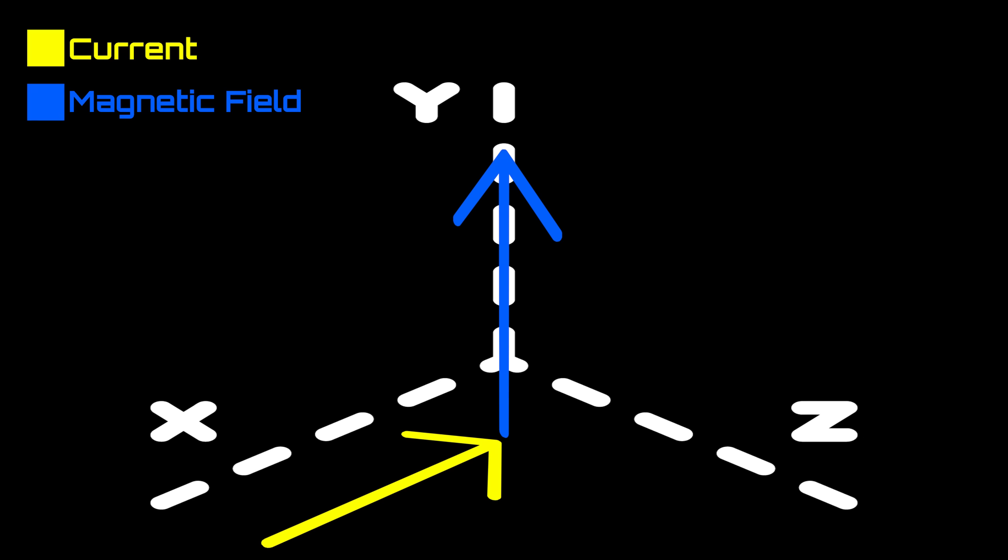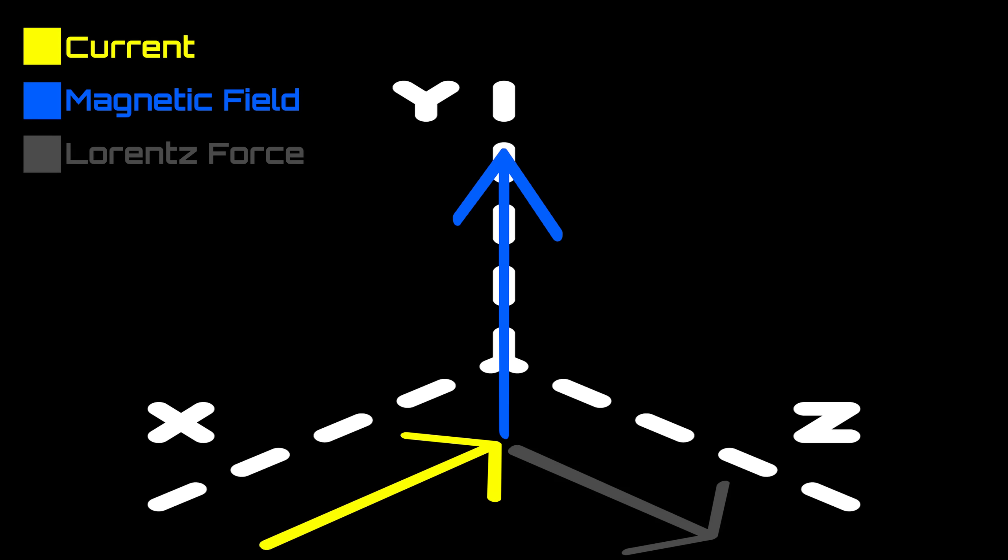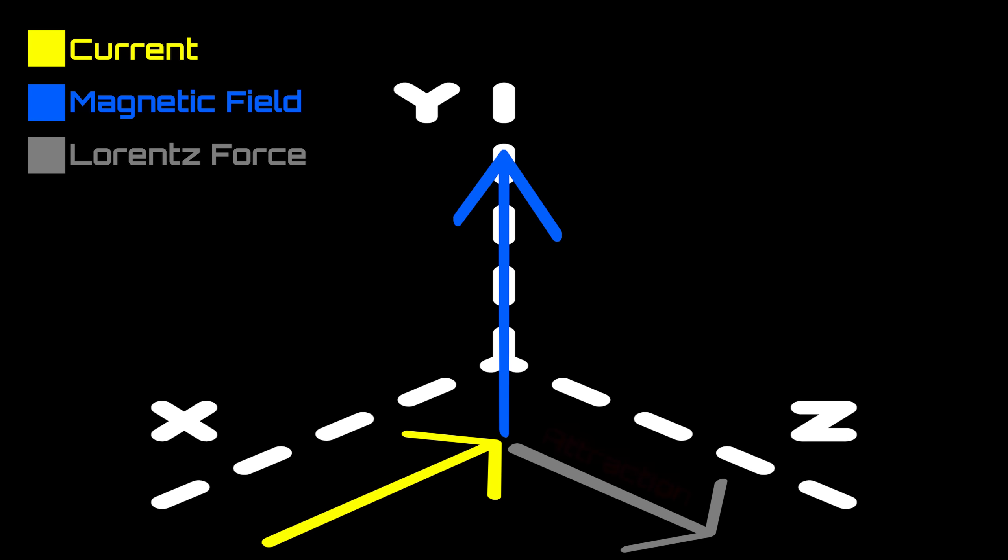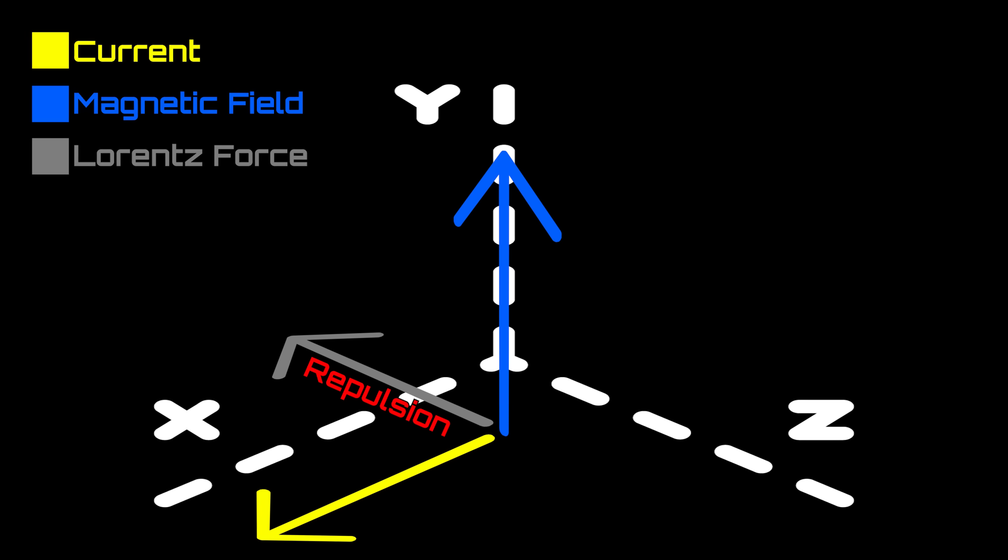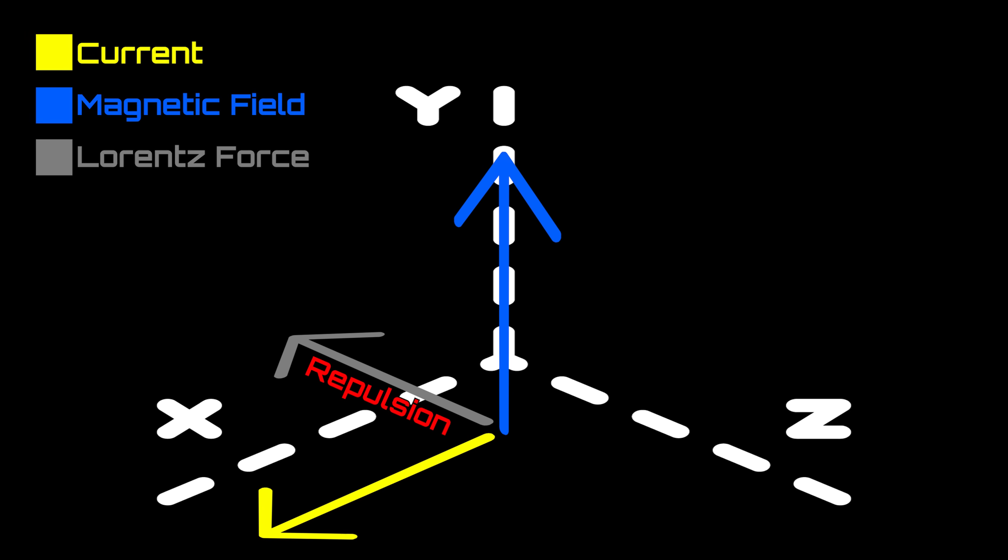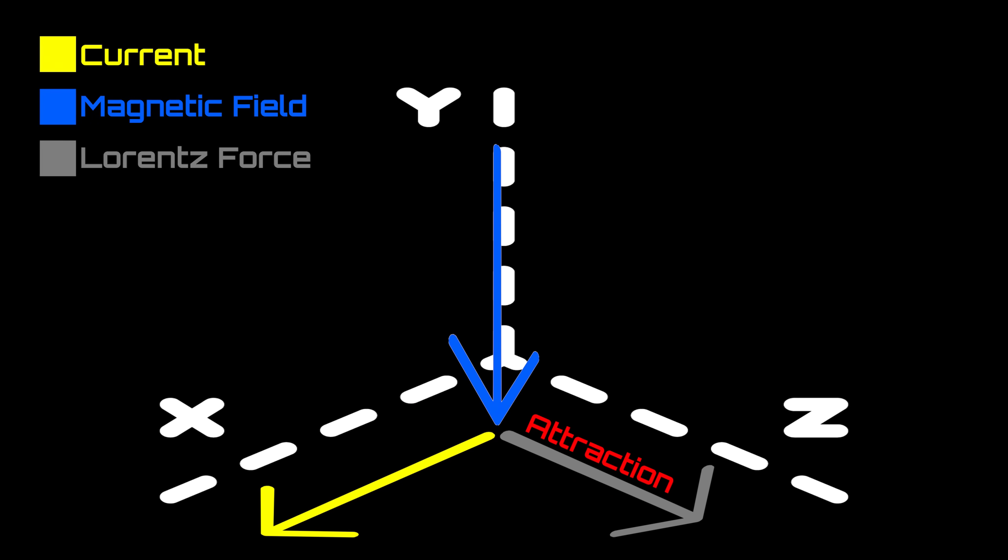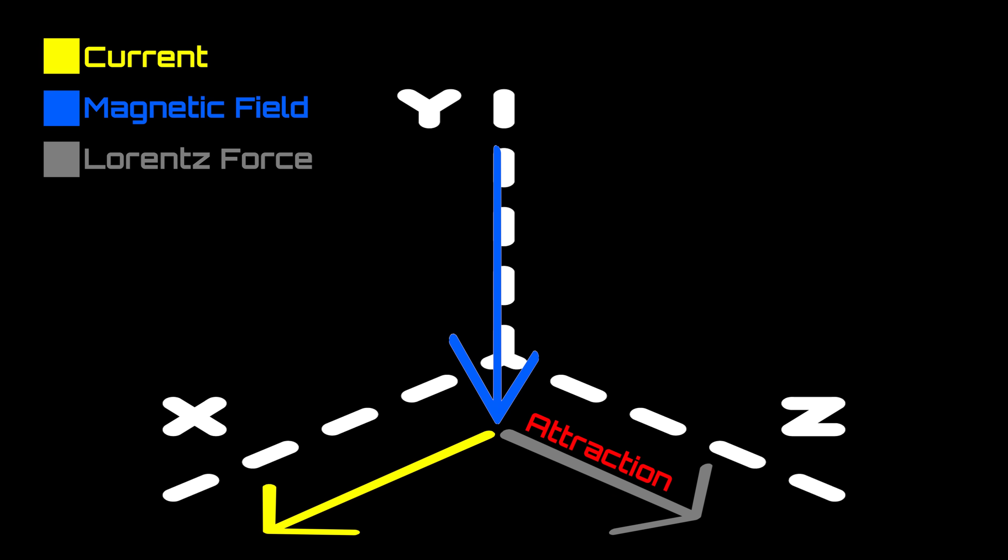This force will either cause an attraction or a repulsion depending on the direction of the current and also the direction of the magnetic field. The Lorentz force is the reason that if you put a magnet or strong electric current near a compass, you temporarily jam its capabilities and it goes all wonky.